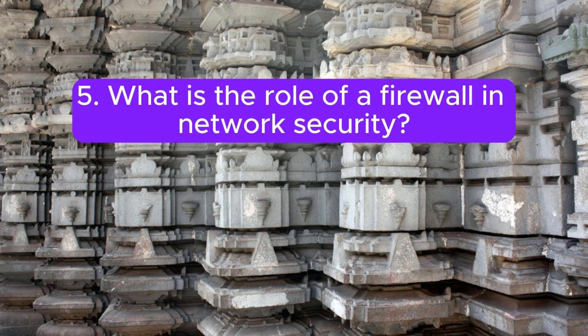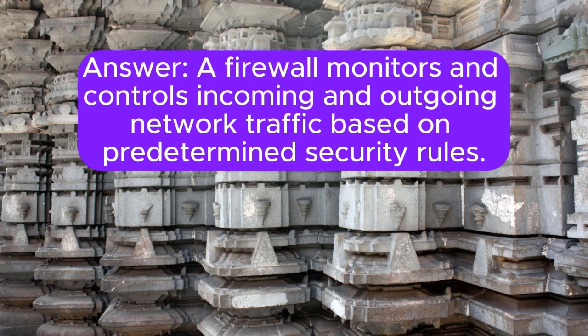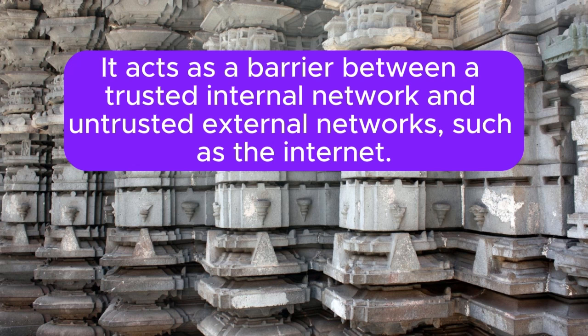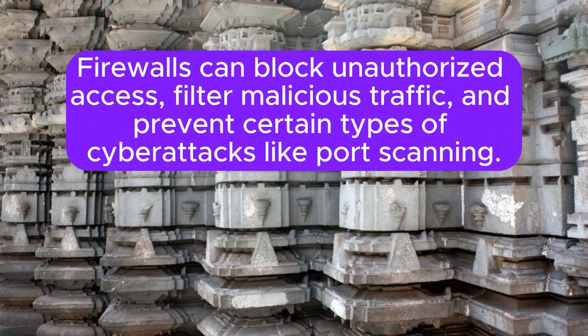5. What is the role of a firewall in network security? A firewall monitors and controls incoming and outgoing network traffic based on predetermined security rules. It acts as a barrier between a trusted internal network and untrusted external networks, such as the Internet. Firewalls can block unauthorized access, filter malicious traffic, and prevent certain types of cyberattacks like port scanning.